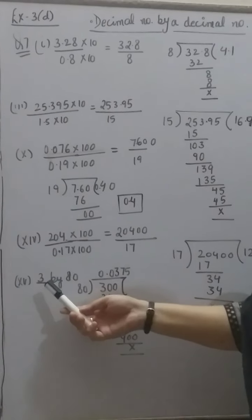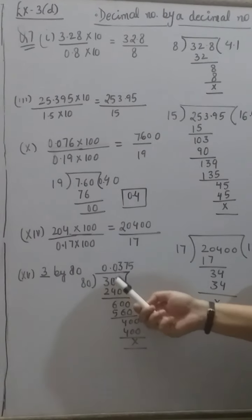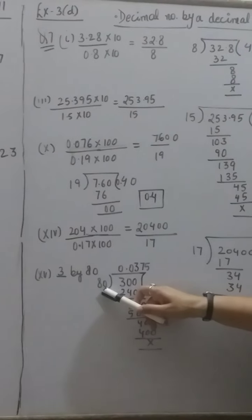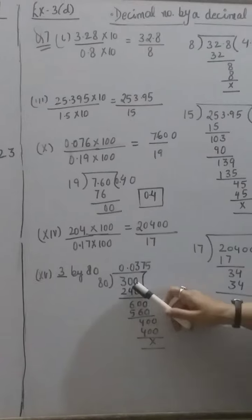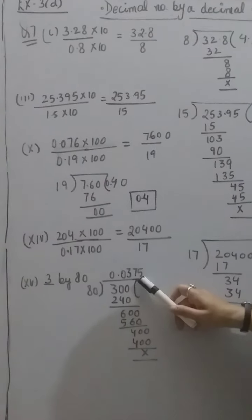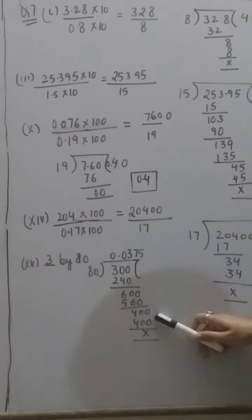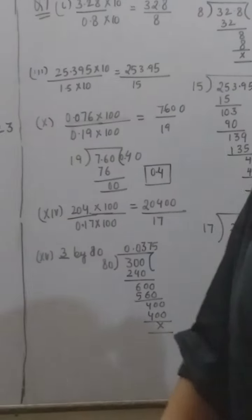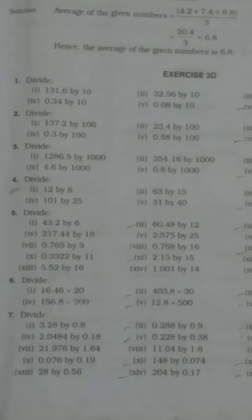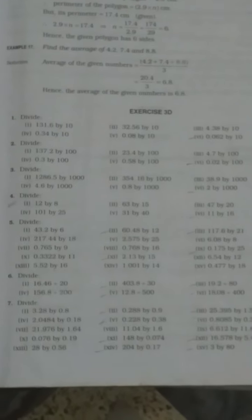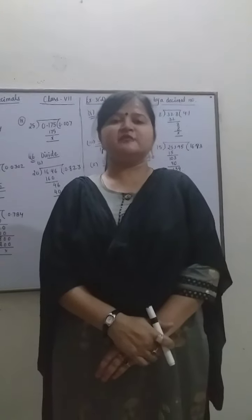15th part: we have to divide 3 by 80. 3 is less than 80, so we place 0 and add a zero to get 30; still less than 80, so place 0 again to get 300. 80 threes are 240; we are left with 60. Add a zero; 80 sevens are 560; left with 40. Add another zero; 80 fives are 400. Children, I am going to show you the book so you can practice more questions at home. That's all for today's session. We will meet in the next session. Thank you.